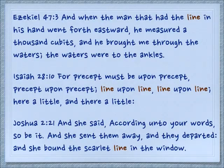Another measuring line in Ezekiel 47:3 — 'And when the man that had the line in his hand went forth eastward, he measured a thousand cubits, and he brought me through the waters. The waters were to the ankles.'